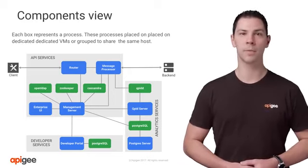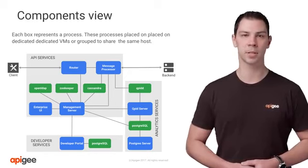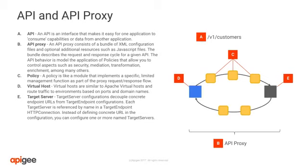Over the next few minutes, we will focus on introducing some key concepts and terms used by Apigee. APIs allow you to provide access to resources. On the slide, we will illustrate an example of a customer API. An API implementation is called an API proxy. An API proxy allows you to describe the request and response flow for a given API.